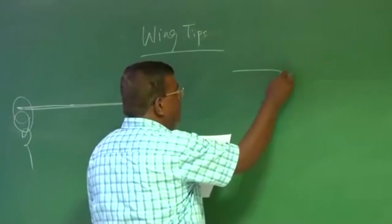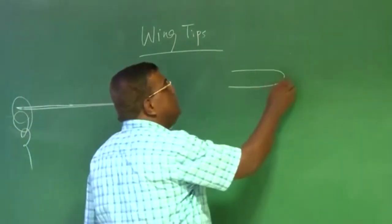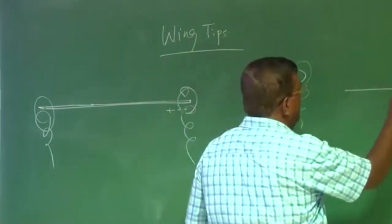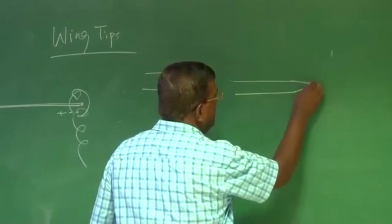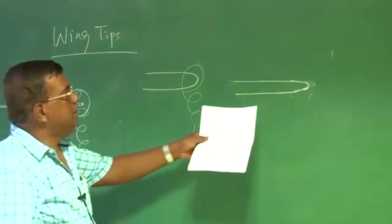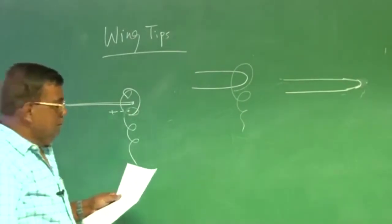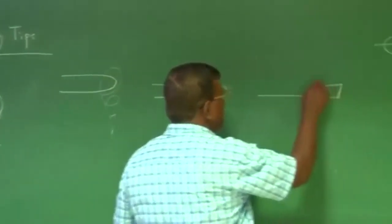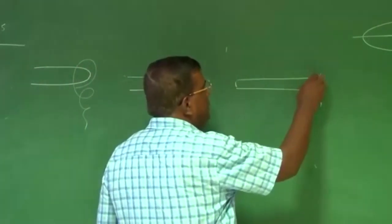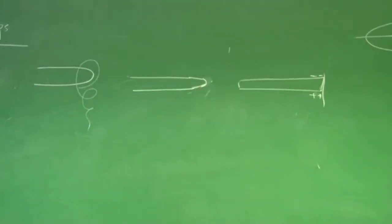And induced drag phenomena is something here. The vortices form here because of pressure differences. So if you want to reduce this induced drag, somehow I should discourage the tendency of the flow from high pressure to lower pressure region. There are many ways of doing it. If you have a simple, faired tip, this will allow the flow to easily go and encircle and create wingtip vortices.